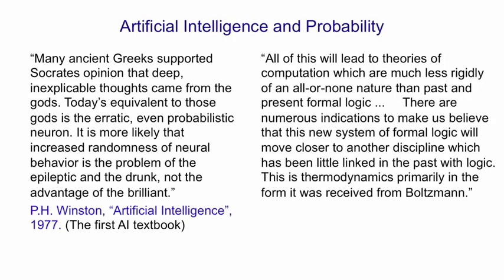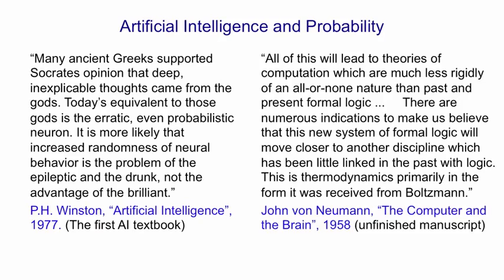Here's an alternative view: "All of this will lead to theories of computation which are much less rigidly of an all-or-none nature than past and present formal logic. There are numerous indications to make us believe that this new system of formal logic will move closer to another discipline which has been little linked in the past with logic. This is thermodynamics, primarily in the form it was received from Boltzmann." That was written by John von Neumann in 1957, and was part of the unfinished manuscript he left behind — his book on the computer and the brain. I think if von Neumann had lived, the history of artificial intelligence might have been somewhat different.